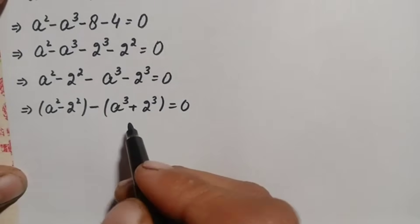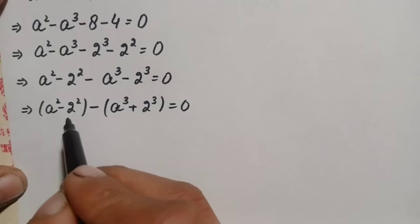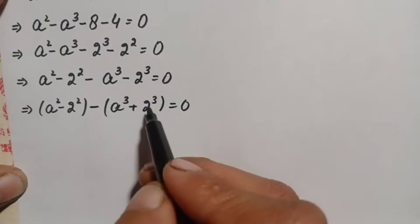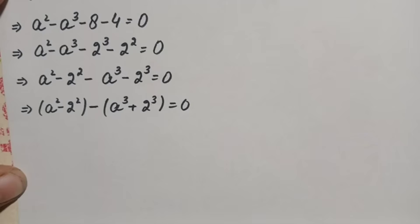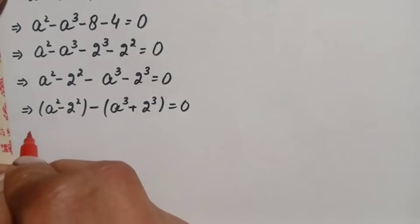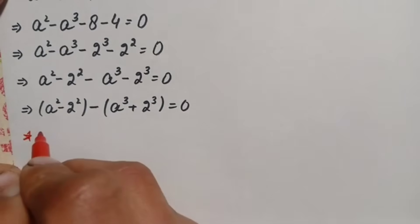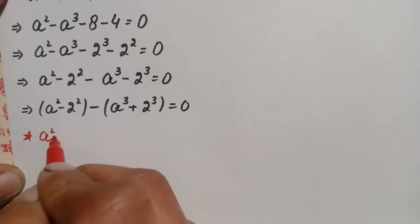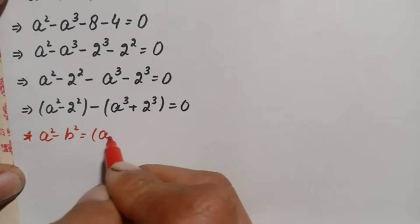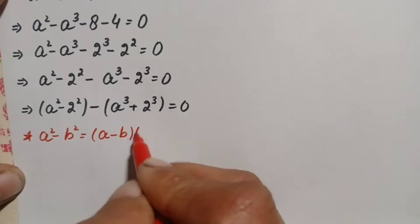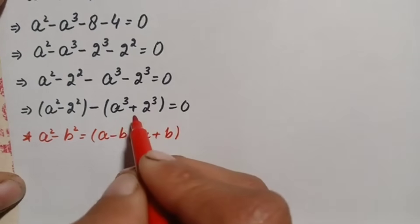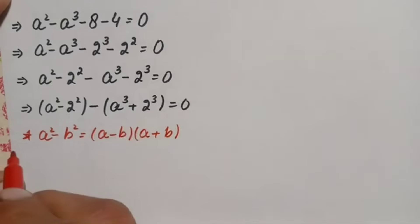Here we will use two different algebraic identities. For the squared terms we use the identity a squared minus b squared, and for the cubic terms we use the identity a cubed plus b cubed. The first identity is a squared minus b squared equals a minus b times a plus b.